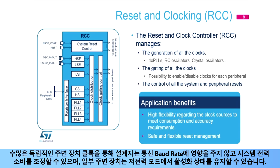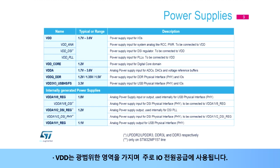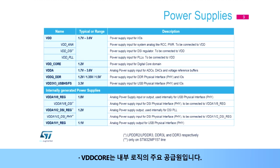The STM32 MP15X microprocessor requires various dedicated power supplies. VDD has a wide range and is mostly used to supply the IOs. VDD core is the main supply for the internal logic. VDD-A is used for the analog parts of the chip.